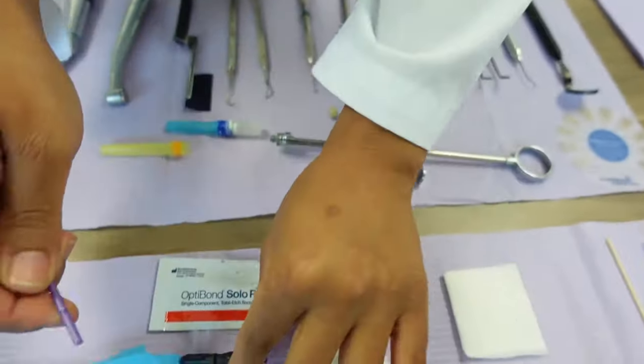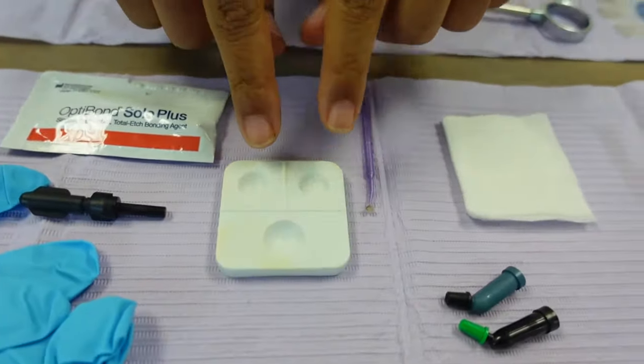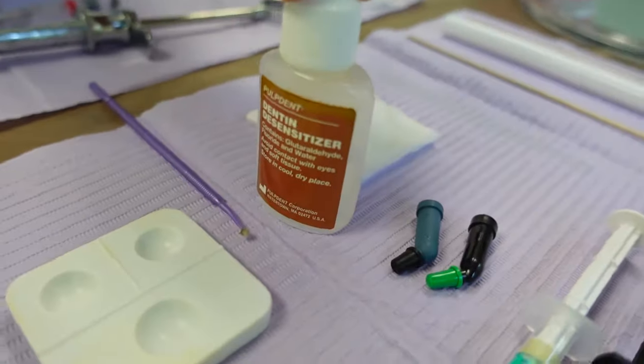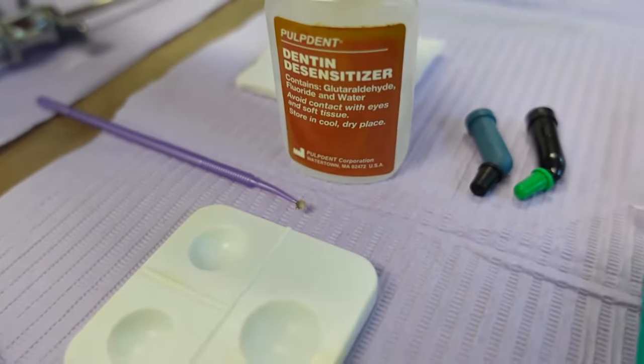Now this well is for when we use the sensitizer, which is sometimes used to line the pulp so the patient won't have that much sensitivity after the filling is done, especially composite fillings.